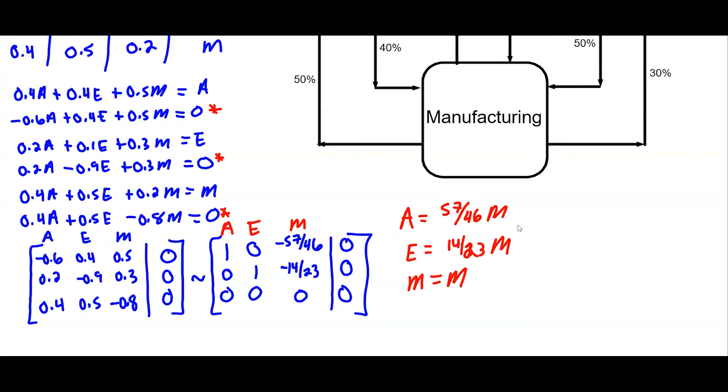So just as an example, let's say that M was 46 million dollars. So that 46 would cancel the 46 and this would be, energy would have 28 million. And it would, 46 would cancel this 46, I would get agriculture would have 57 million.